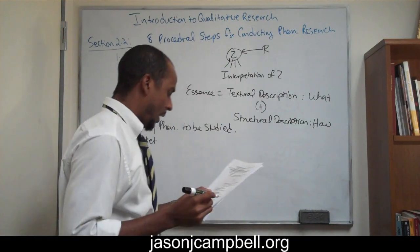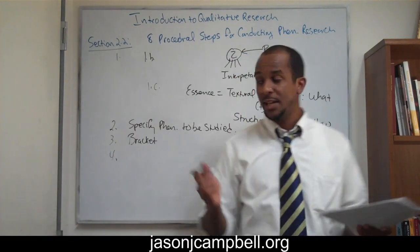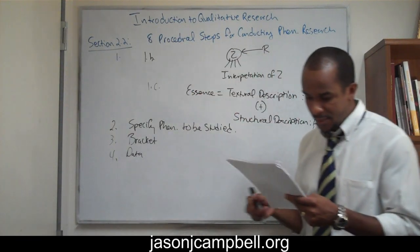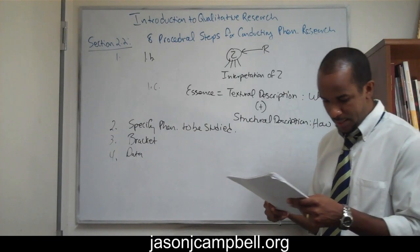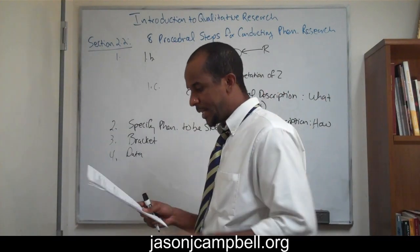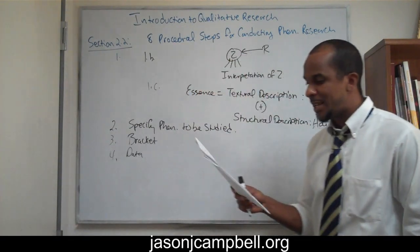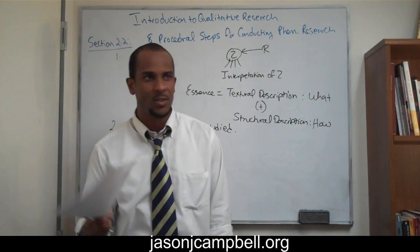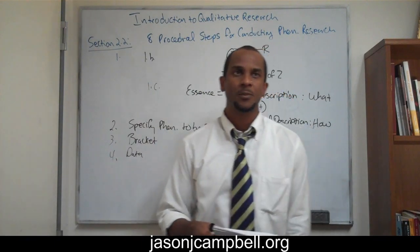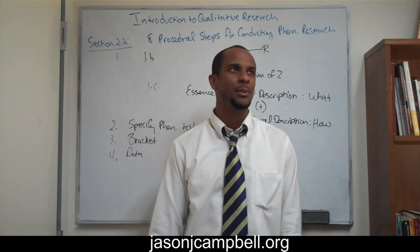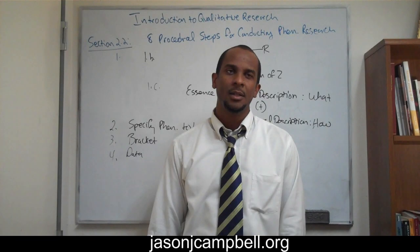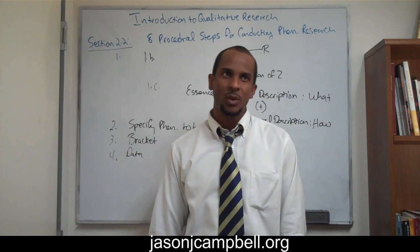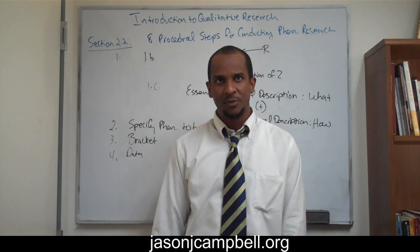Number four: we want to collect the data — data collection. The best sample sizes, and this comes from Polkinghorne, 1989, I have the footnotes there — the best sample size for phenomenological research is 5 to 25 participants. This is give or take. My sample size was pretty high, around that range. So 5 is not bad; 25 is pretty large.